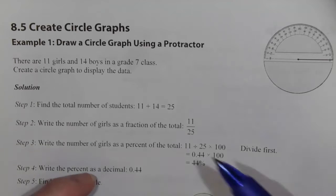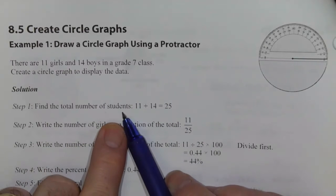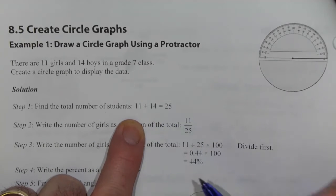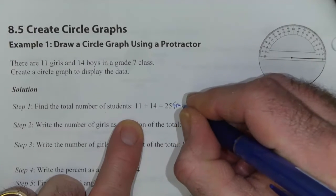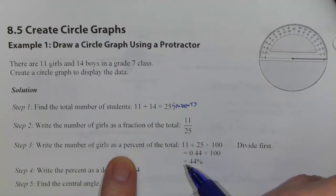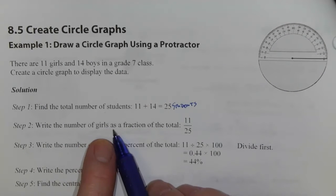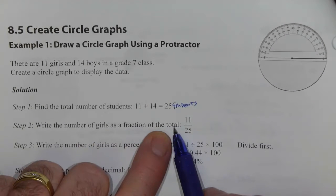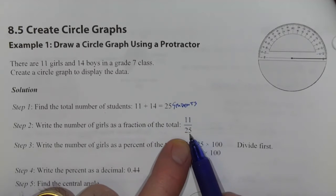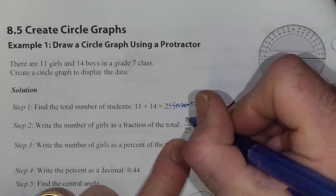Step one is to find the total number of students in this class. So we're going to add our 11 girls and 14 boys together to get 25 students. Now let's look at the girls. We're going to write the number of girls as a fraction of the total. So there are 11 girls out of a possible 25 students. So this is the fraction of the girls.